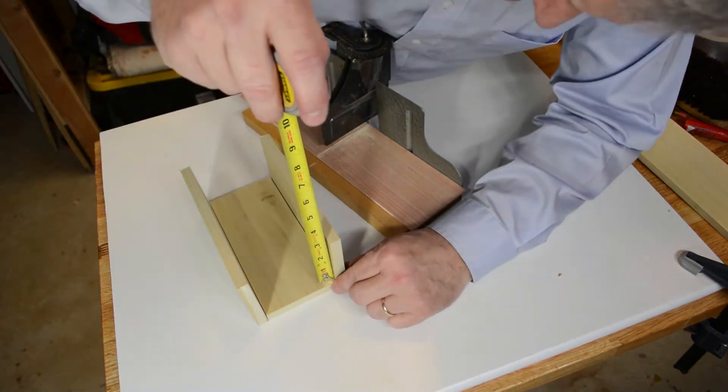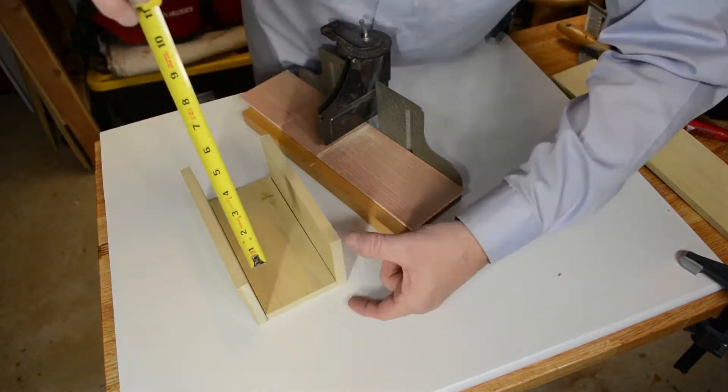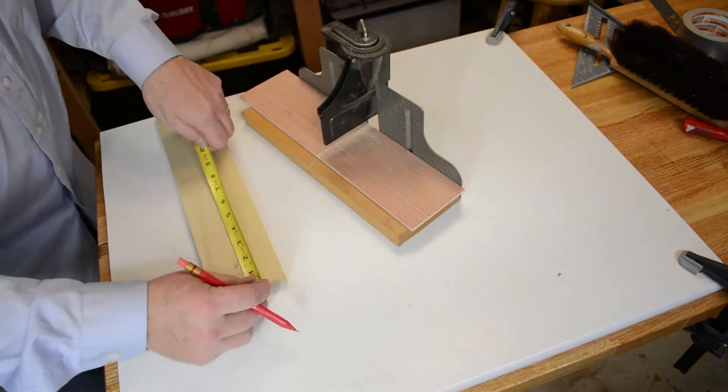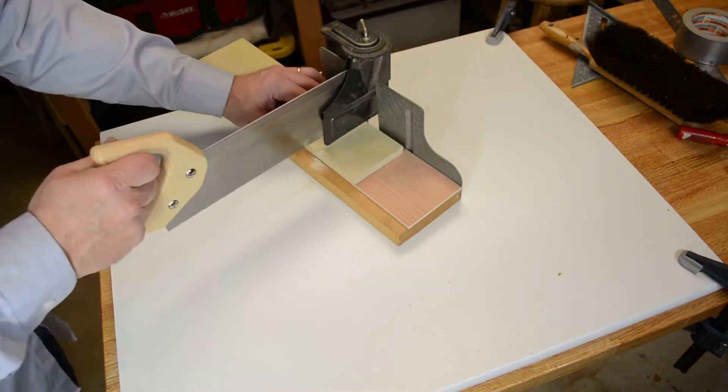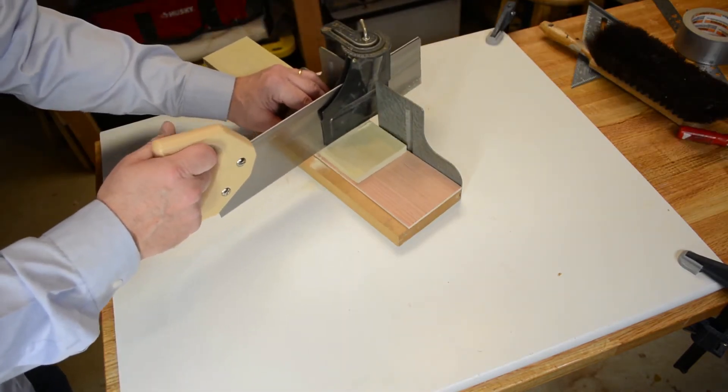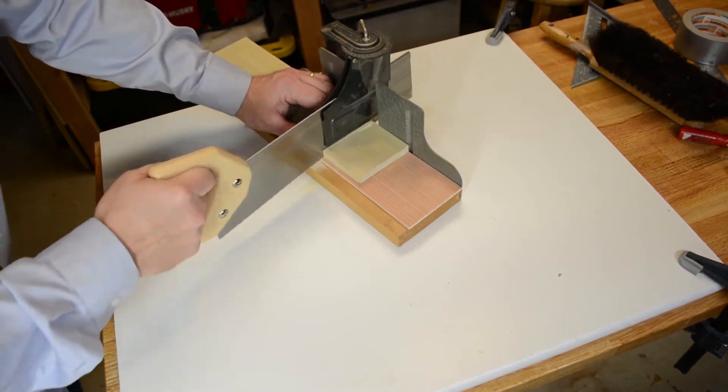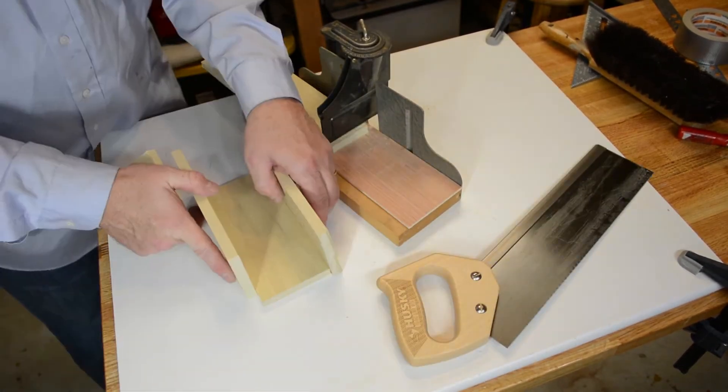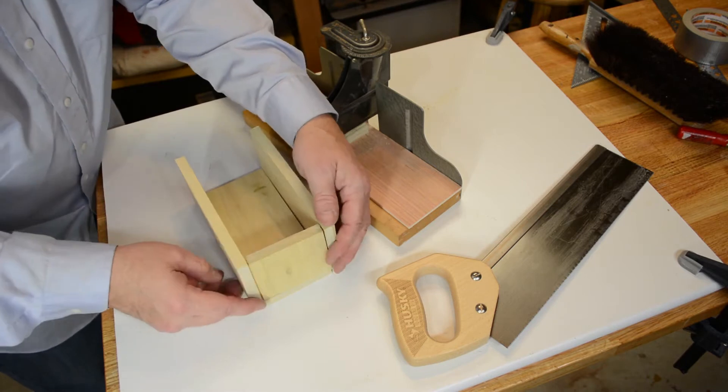So now we're going to cut the sides. The way that I've got this laid out, I'm going to use that same, again, piece of lumber, that just that four foot project piece of poplar. And I'll cut the piece that I need to match that height. So that's all the same.